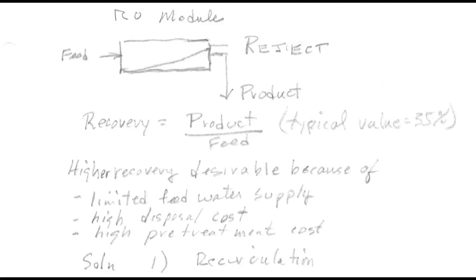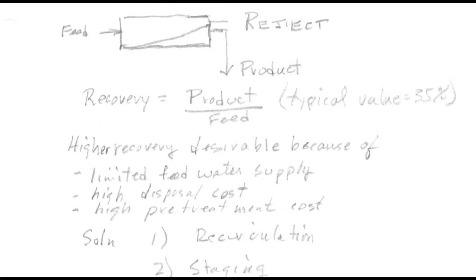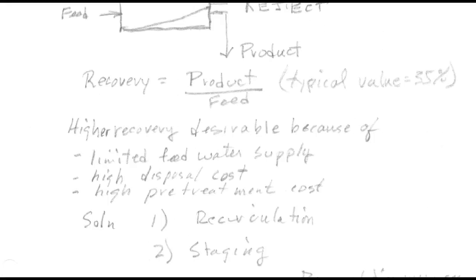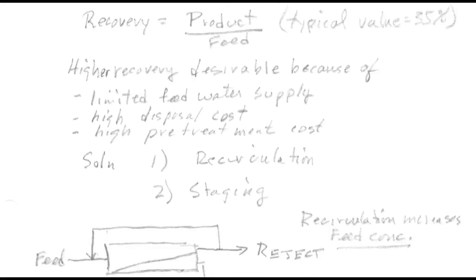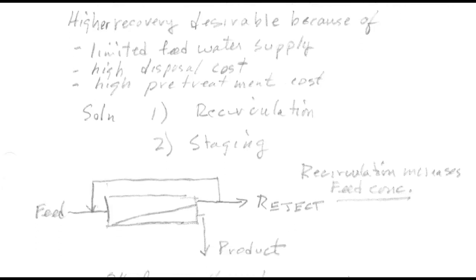For a number of reasons, for example limited feed water supply, you could have high disposal cost of the concentrate, you could have high pre-treatment cost which is obviously the case. So the solution for increasing the recovery is in one way recirculation around a single module or staging.